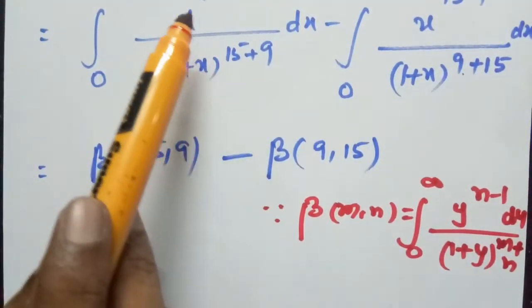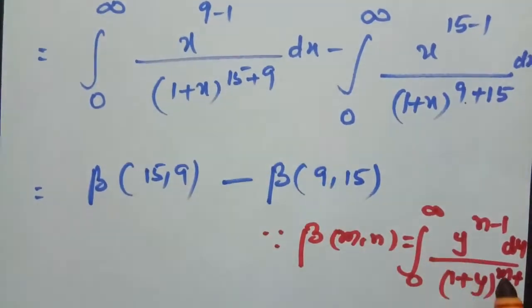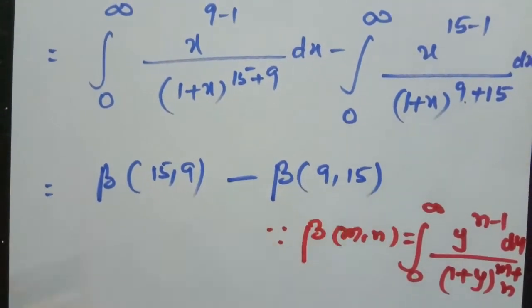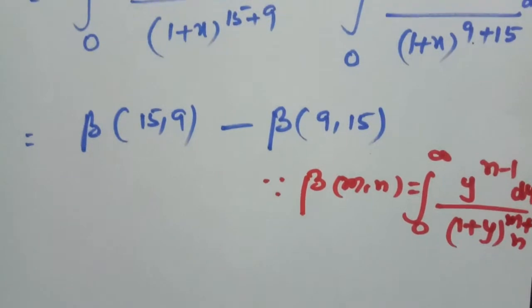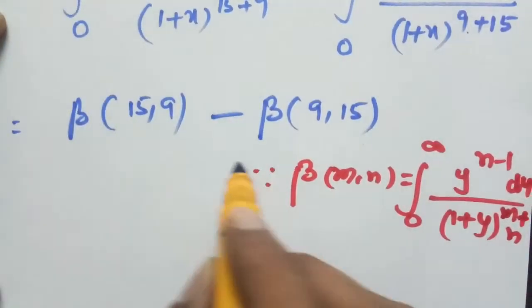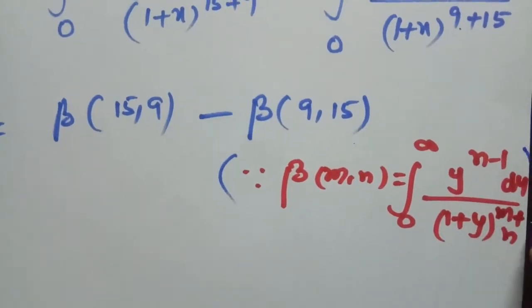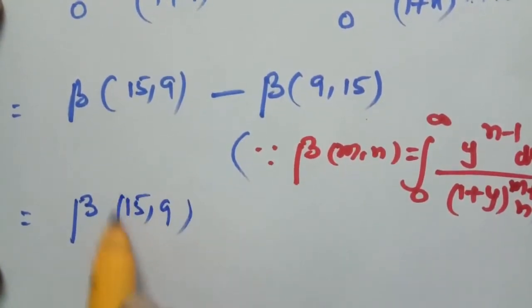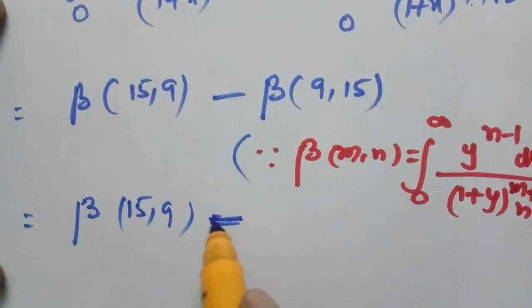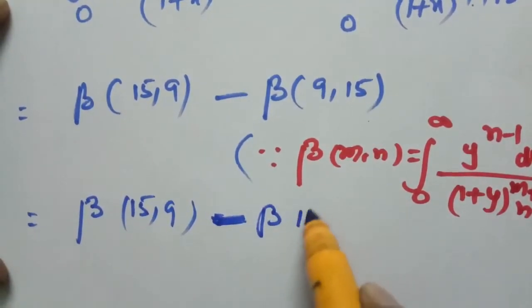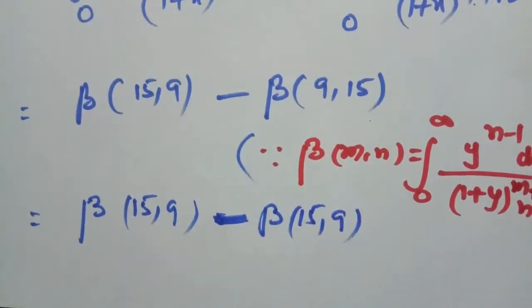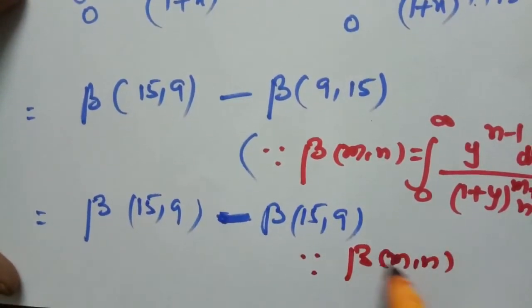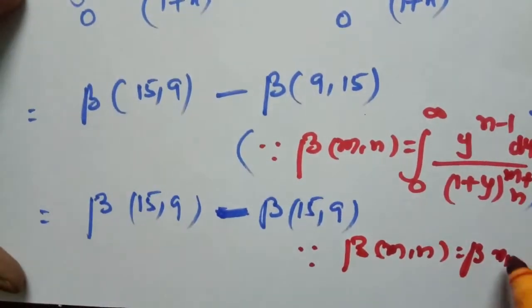Therefore, in the first integration n equals 9 and m equals 15, giving beta(15, 9). In the second, n is 15 and m is 9, giving beta(9, 15). By the symmetry property of the beta function, this can be written as beta(15, 9) minus beta(15, 9), since beta(m, n) equals beta(n, m).